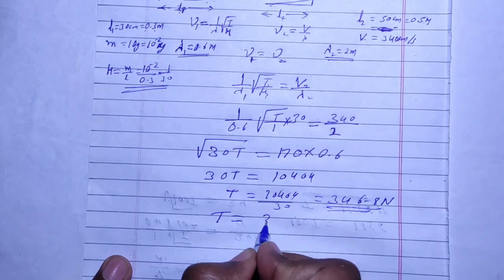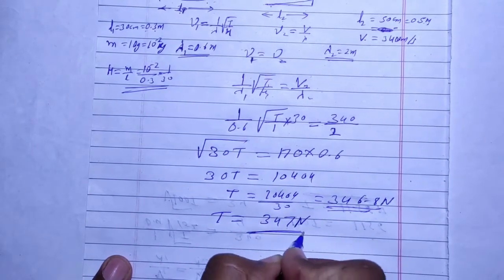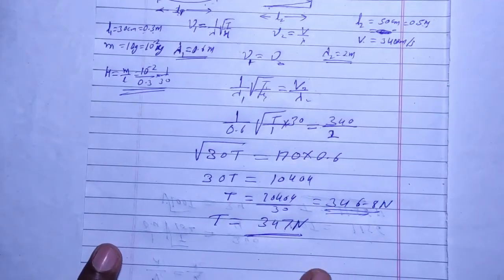Solving this, root T by 30 equals 340 by 2. Therefore T equals 347 Newtons. The tension in the string is 347 Newtons.